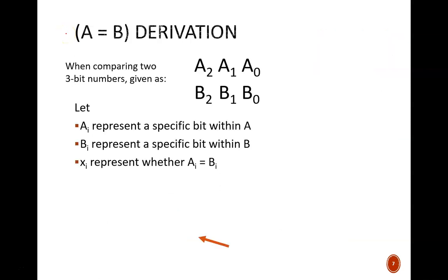First, let's define the two input numbers as A and B, each having bits 2 through 0, as shown here. A sub i will represent any bit within A. For example, if i is 0, then A sub 0 means we are referring to the least significant bit in A. And if i is 2, then A sub 2 means we are referring to the most significant bit.